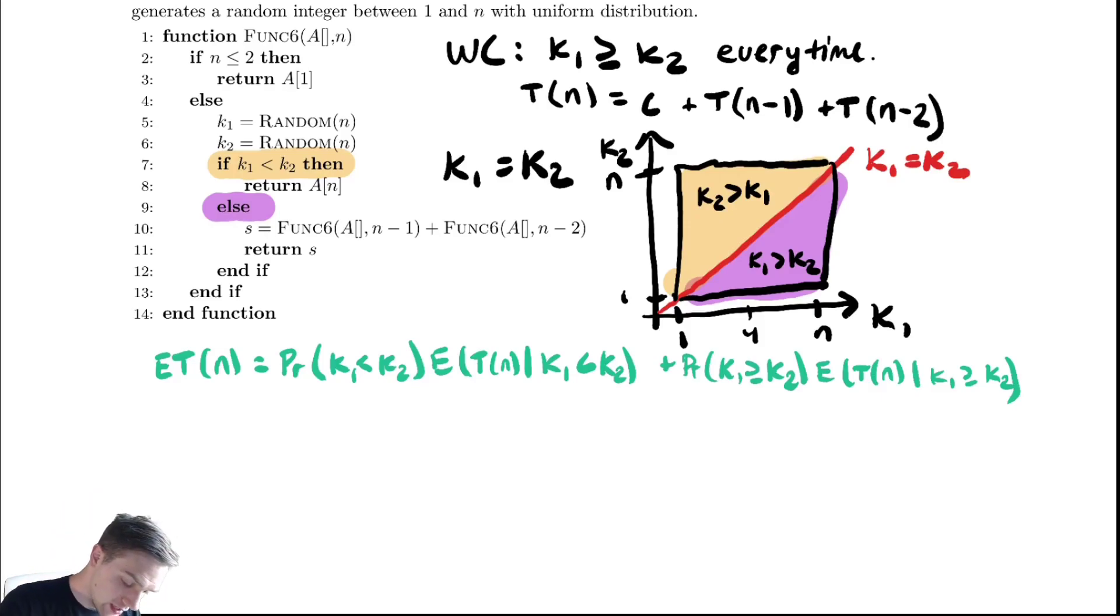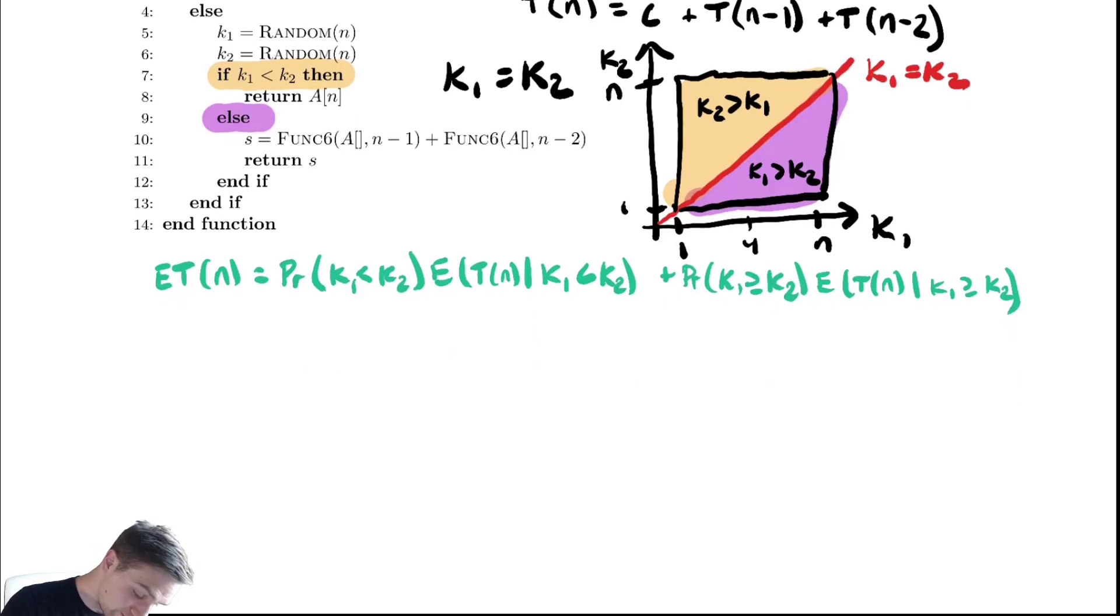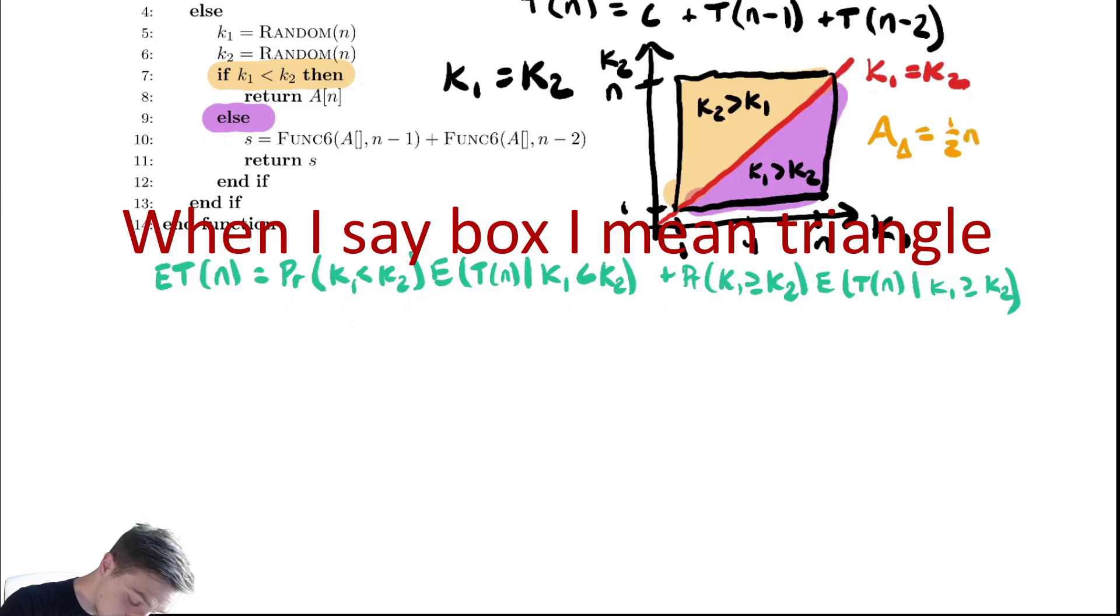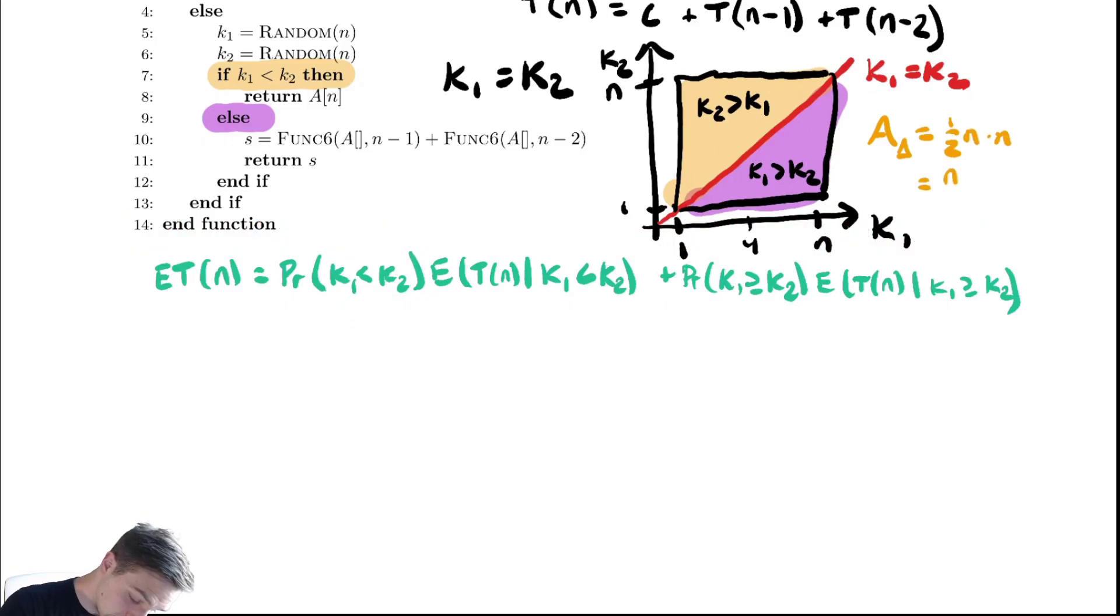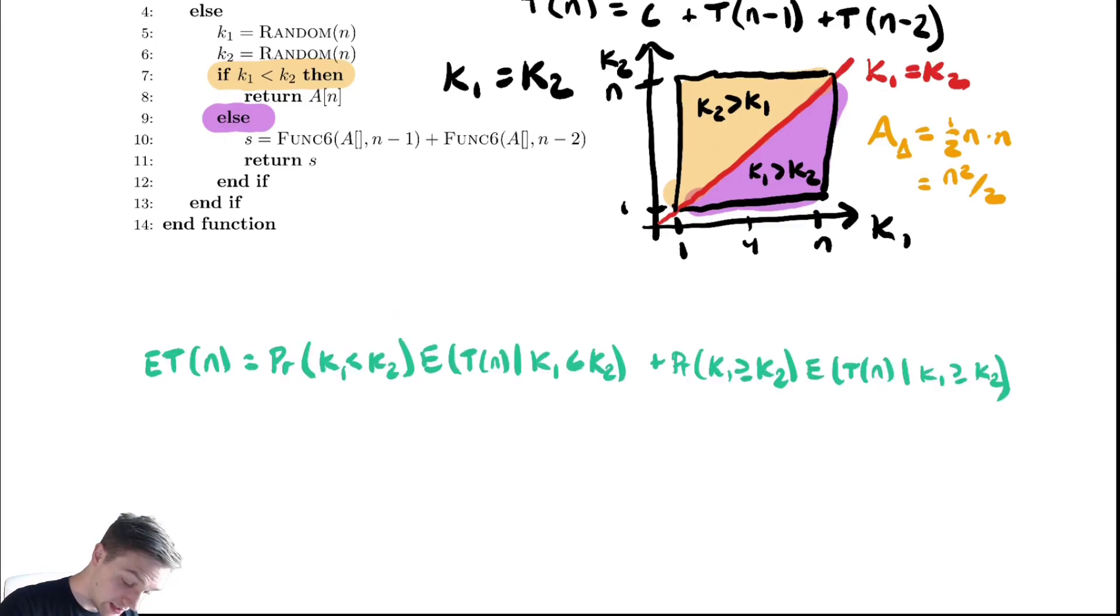So let's figure out the area of the orange box. Area of the triangle is 1/2. The base of that box is n and the height of that box is n. So that's n squared over 2. The area of the box would be base times height, which is n squared. So the relative area of the orange portion is n squared over 2 over n squared, which is the same as 1/2.